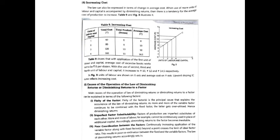It is called increasing cost because when we apply more labor, the additional labor's productivity decreases but the cost remains the same. Because productivity is decreasing, the average cost increases. For example, one unit of labor costs 40 and total product is five.